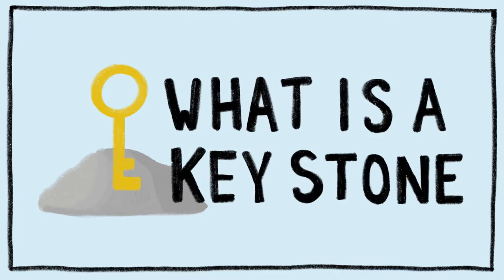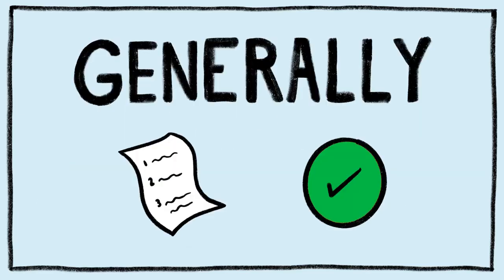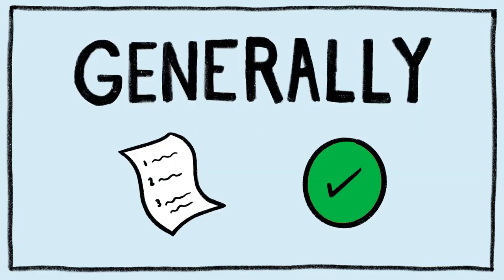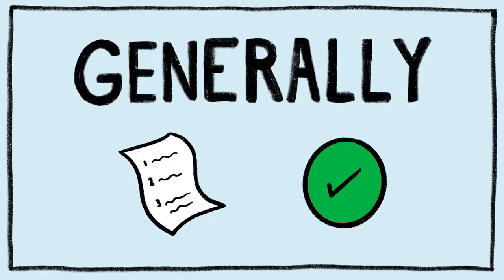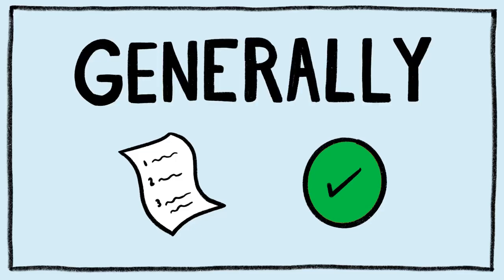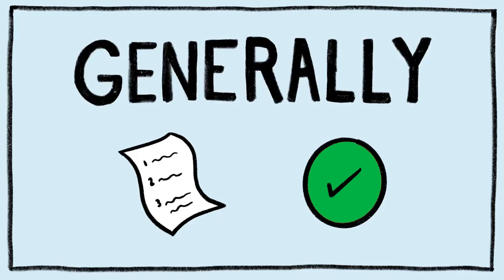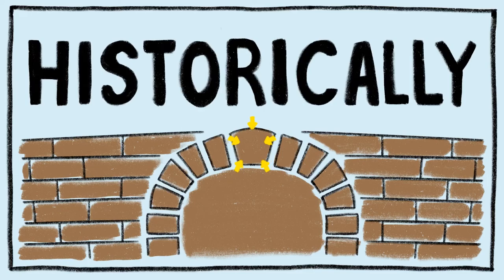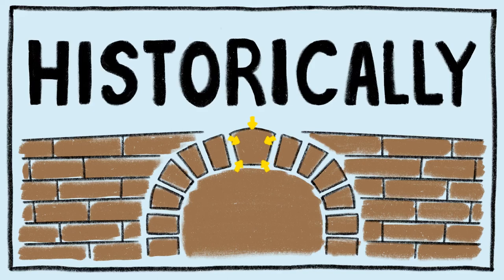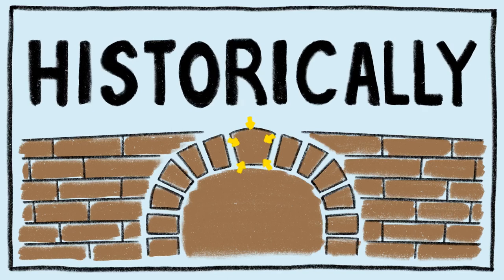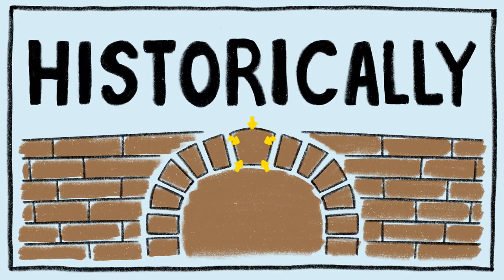What is a keystone? Generally, a keystone is the central principle or part of a policy, system, etc., on which other things depend on. Historically, a keystone is the central stone at the top of an arch. It helps to lock the whole arch together.